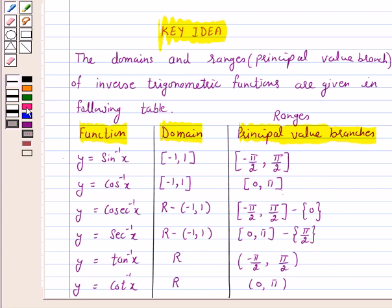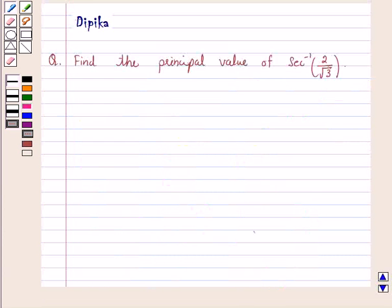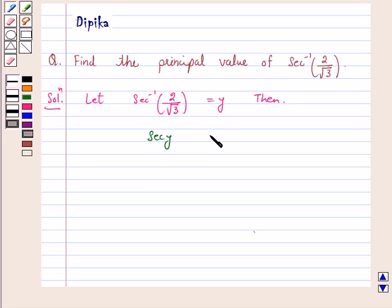Let's start the solution. Let secant inverse 2 upon root 3 equal y. Then secant y equals 2 over root 3. Now this is equal to secant pi by 6.